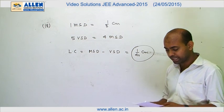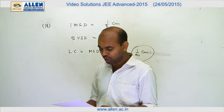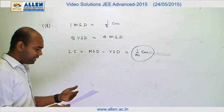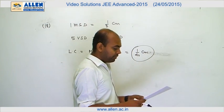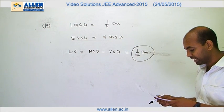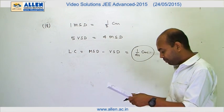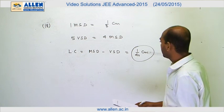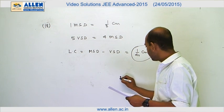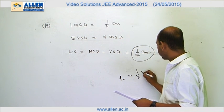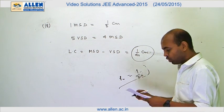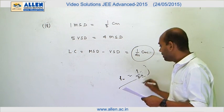In the second part, they have talked about a screw gauge. For options A and B, the pitch of the screw gauge is twice the least count of the Vernier calipers. So pitch equals twice of 1/40, which comes out to 1/20 centimeter.